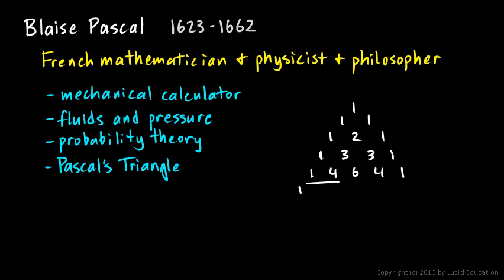There's a one here. And then this one and this four give us a five. And the four and the six give us a ten. And then we have another ten and a five and a one. And we could go on and on. The triangle could be infinitely large.